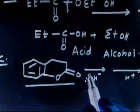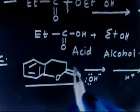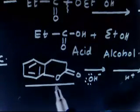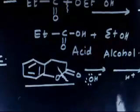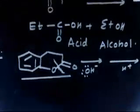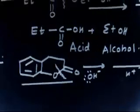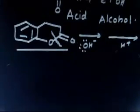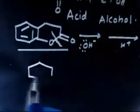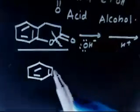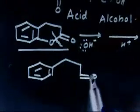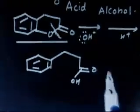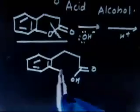In this case, OH⁻ attacks this carbonyl carbon, opens up, returns back — this oxygen leaves. So this side you will have alcohol and this side you will have acid. I have to break along this bond. So if I write the product: this side I have a benzene ring, and this side I will have COOH, and this side I will have an OH group attached.